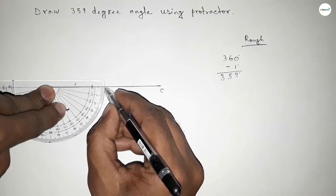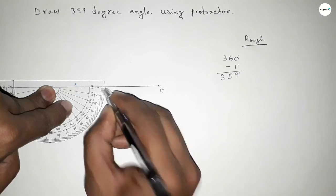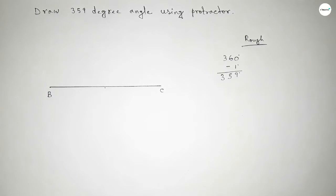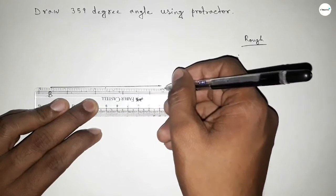Now subtracting one degree - so this is one degree. Now joining this side to get 359 degrees.